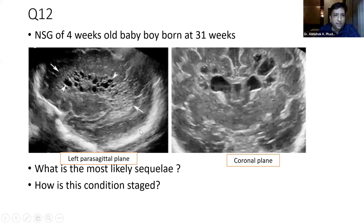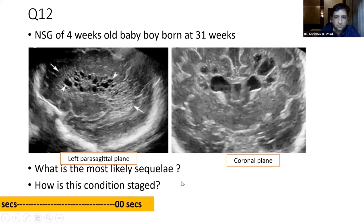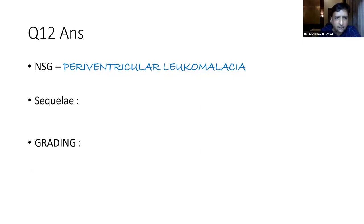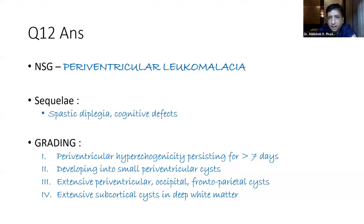Question 12: NSG of a baby four weeks old, born at 31 weeks — parasagittal and coronal plane. What is the most likely sequelae? How is this condition staged? It is periventricular leukomalacia (PVL). Major sequelae include spastic diplegia and cognitive defects. Grading is from grade 1 to 4 — very important to know the grading, whether for PVL or IVH. All neurosonogram images can appear in your examinations.